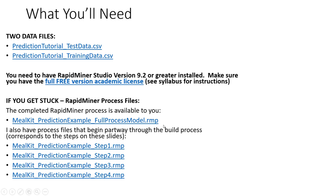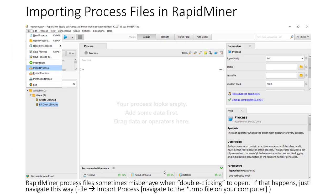Maybe you just don't want to see the final solution, but rather you want to practice on a given part of the process file. I have broken up the process file into four major steps, each one building upon the other. If you ever need to import a .rmp or RapidMiner process file, once you download that file, simply navigate in RapidMiner to File > Import Process and navigate to wherever that file was stored on your machine.